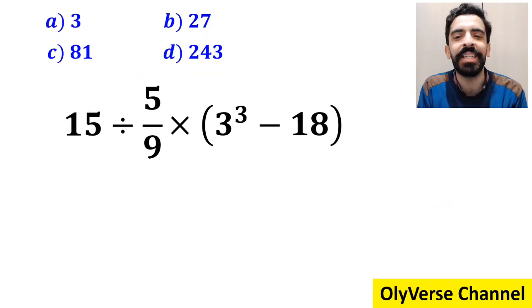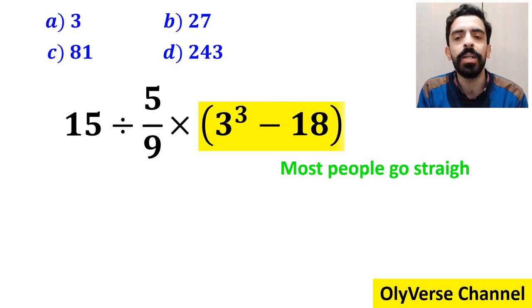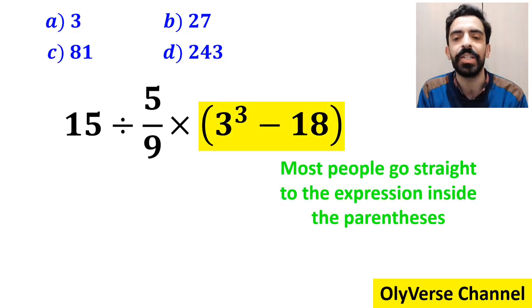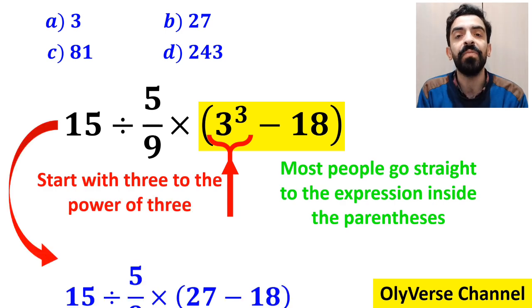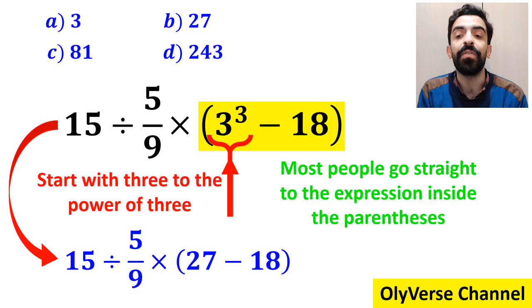Let's go step by step and solve it together. The first step of solving this question, most people go straight to the expression inside the parenthesis and solve 3 to the power of 3. So instead of the original expression they write 15 divided by 5 over 9 times 27 minus 18 inside the parenthesis.